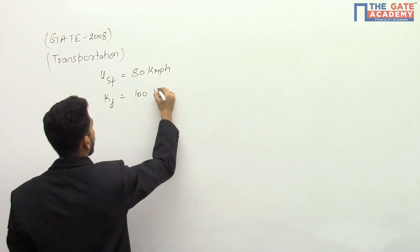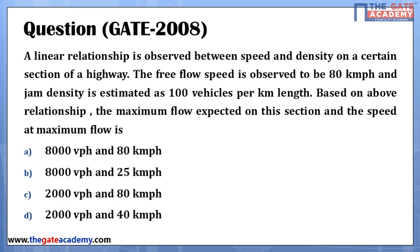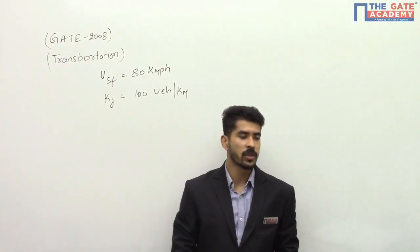Based on the above relationship, the question asks for the maximum flow expected on this section and the speed at maximum flow. Four options are given: first, 8000 vehicles per hour and 80 kmph; second, 8000 vehicles per hour and 25 kmph; third, 2000 vehicles per hour and 80 kmph; and last, 2000 vehicles per hour and 40 kmph.